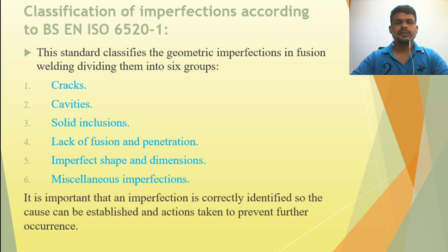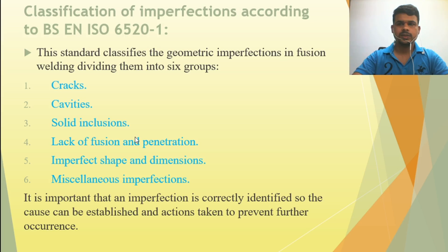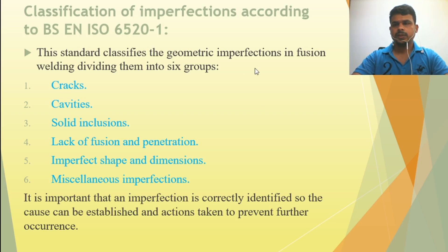It is important that an imperfection is correctly identified so the cause can be established and action taken to prevent further occurrence. First, identify what the imperfection is. Second, identify why this imperfection occurred. Third, set up a system to prevent this type of imperfection from recurring. These three things are essential to remember.